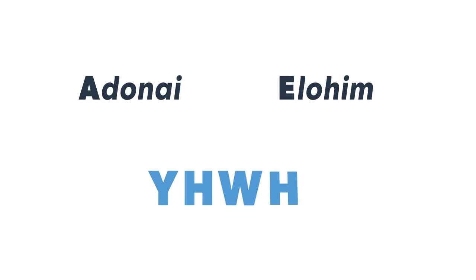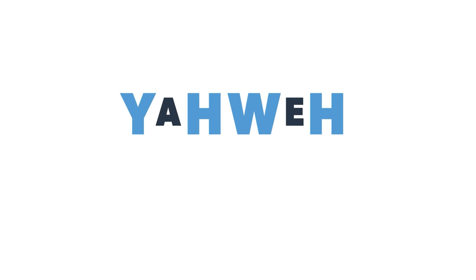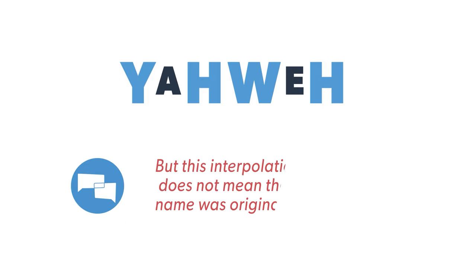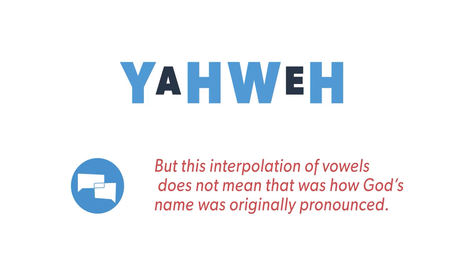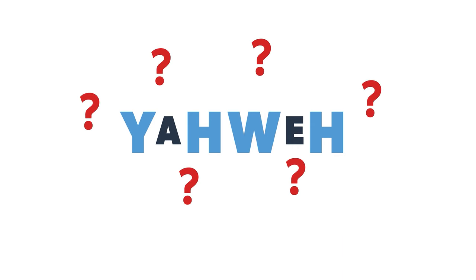Eventually, the vowels from Adonai or Elohim found their way in between the consonants of YHWH, thus forming Yahweh. But this interpolation of vowels does not mean that was how God's name was originally pronounced. In fact, we aren't entirely sure if YHWH should have two syllables or three.